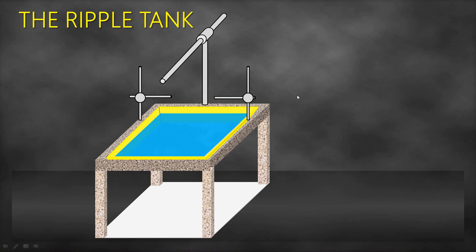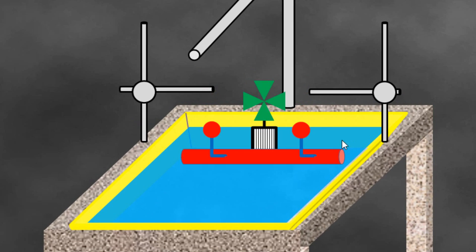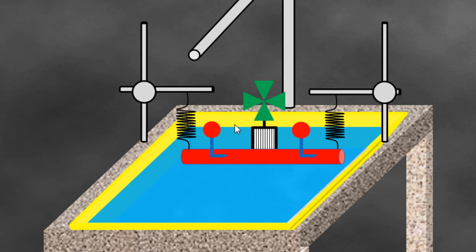We have some simple components to support the setup. We have the dipper — either a bar dipper, which is a plain dipper, or spherical dippers. Connected to the dippers is always a motor, which vibrates at a certain frequency. The dipper is always supported by springs or sometimes rubber bands.